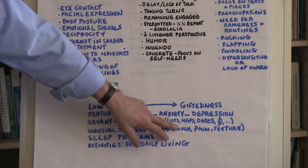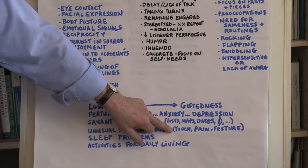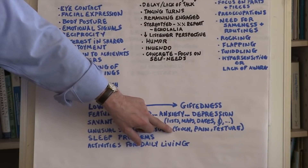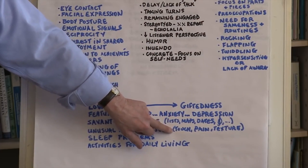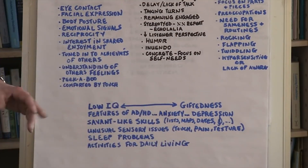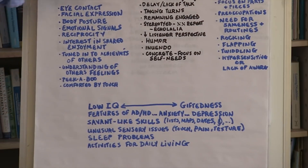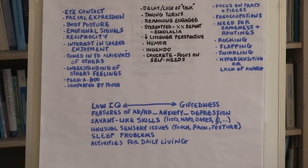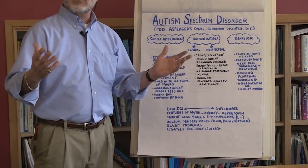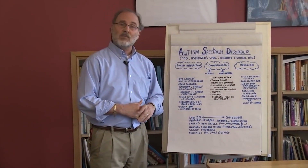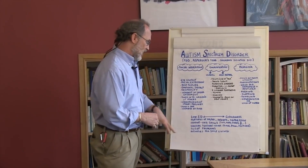Individuals with autism have some unusual sensory issues. They may react differently to touch — finding it very aversive, or conversely not realizing they are touching someone too hard or tapping when they mean to press harder. Some individuals with autism spectrum disorder may have difficulties with modulation of pain, and they often have difficulties with certain textures. Also seen in this population are difficulties with sleep, and activities for daily living are almost always impacted — including the ability to dress, eat, manage money, travel from one place to another, and care for oneself.